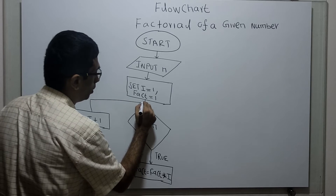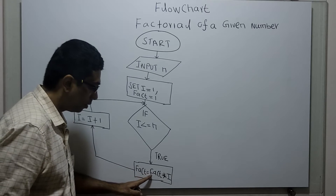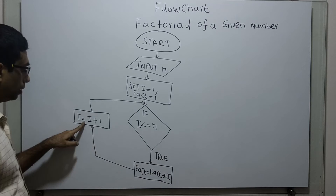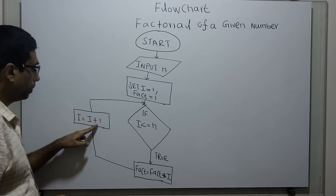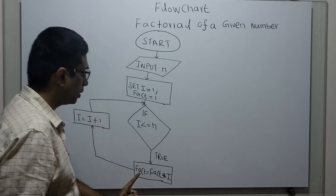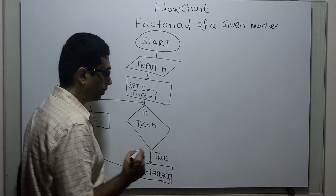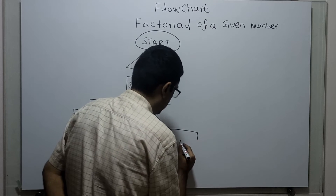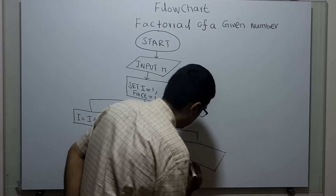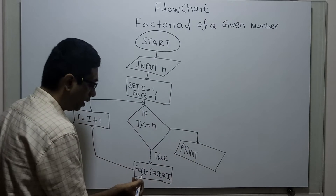Again I am going back to the loop, so if i less than or equal to n, I am calculating fact equal to fact multiplied with the value in the variable i, and I am incrementing i by 1. This loop will go continuously until i less than or equal to n is false, and the fact value will get calculated.